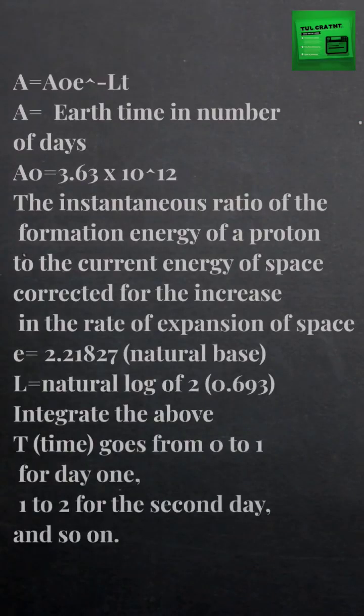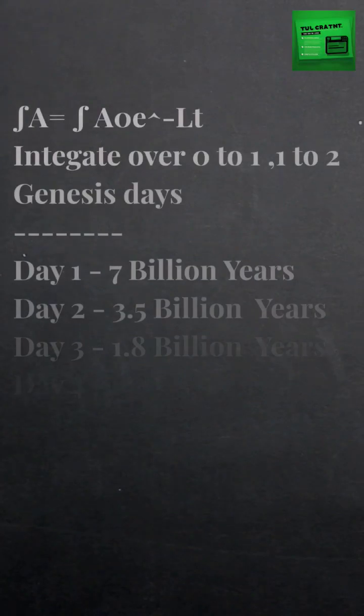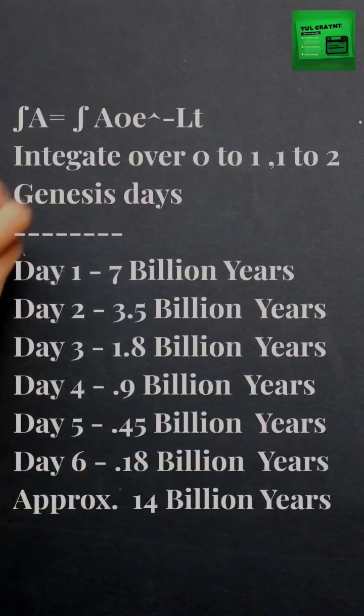To determine the duration of each of the six 24-hour genesis days, we evaluate the equation for each day. T, time, goes from zero to one for day one, one to two for the second day, and so on.